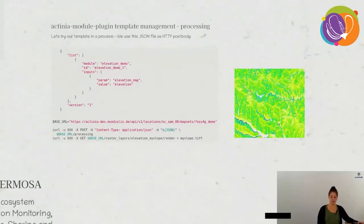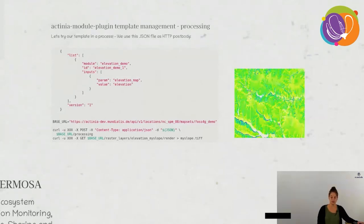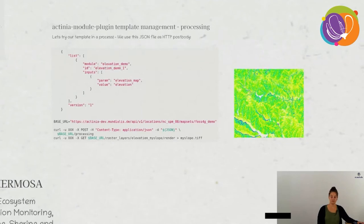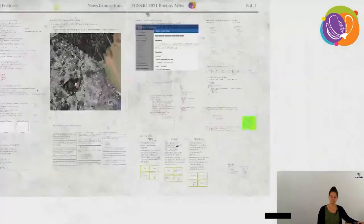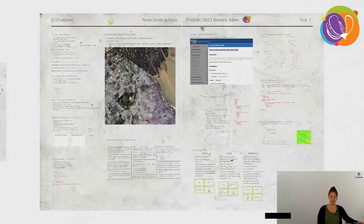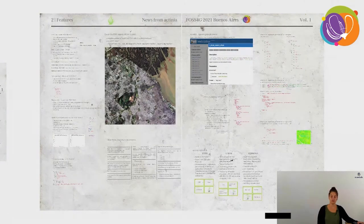The resulting compact JSON can be posted to a processing endpoint and the result retrieved as a map, viewable with ephemeral processing.